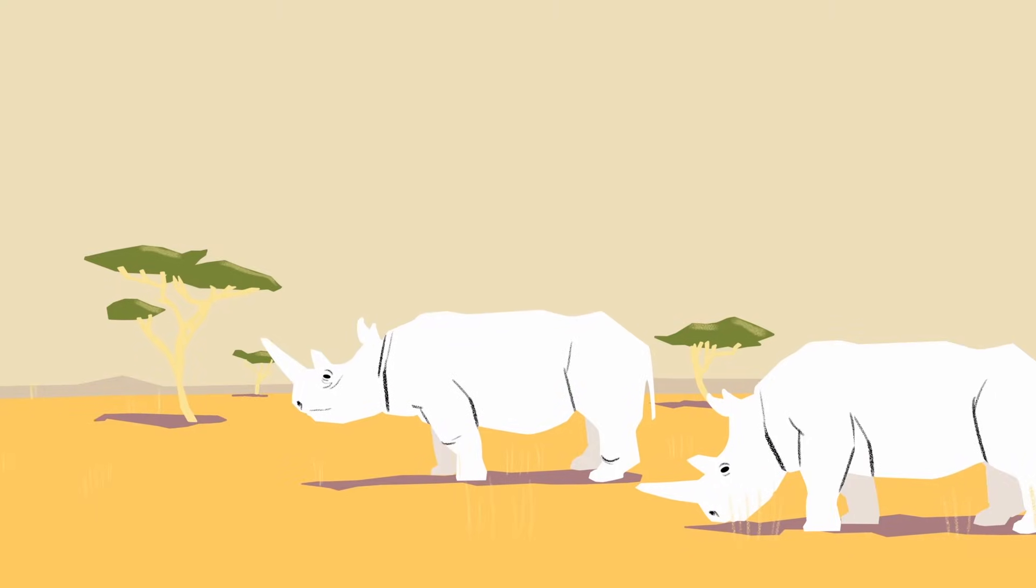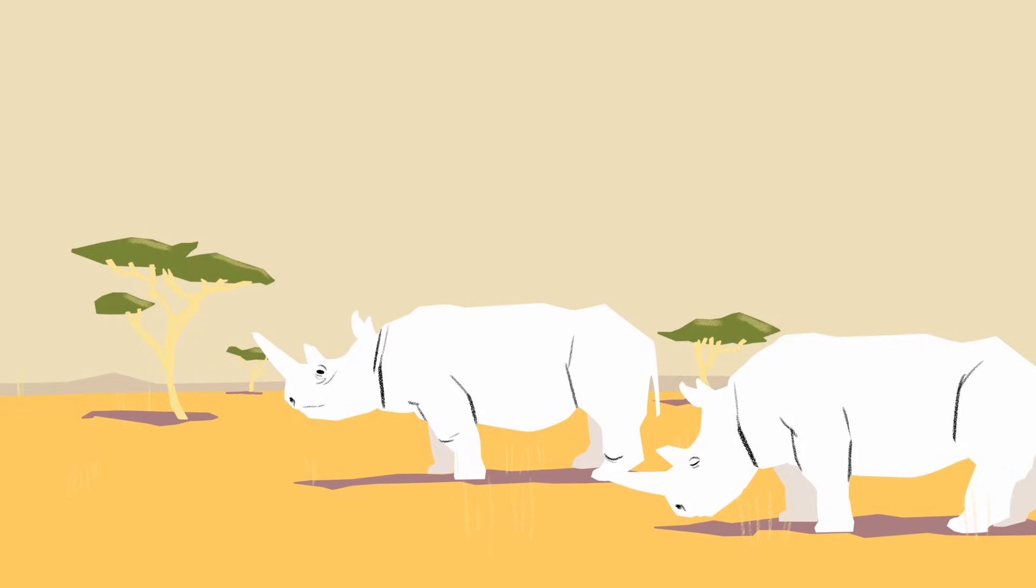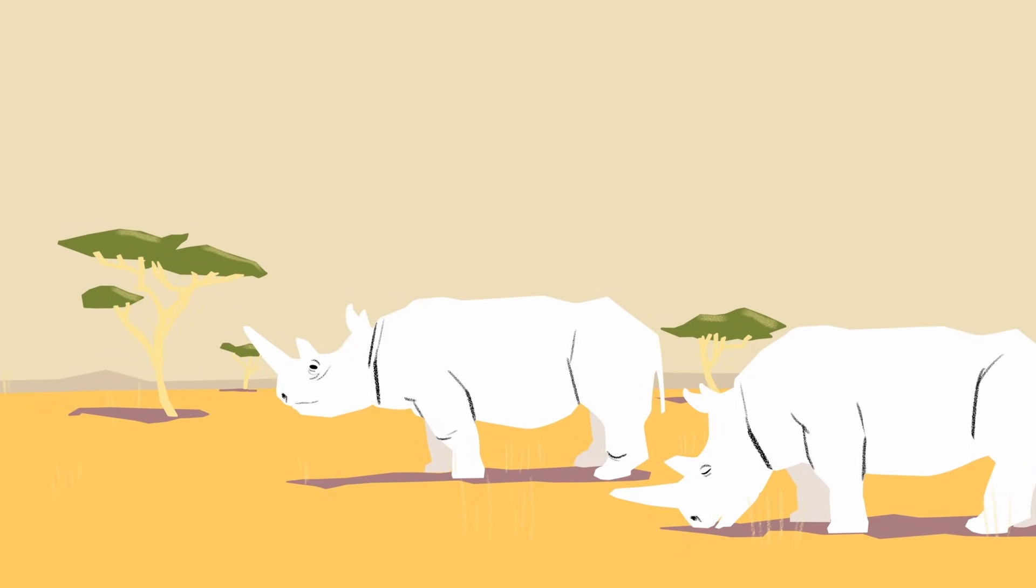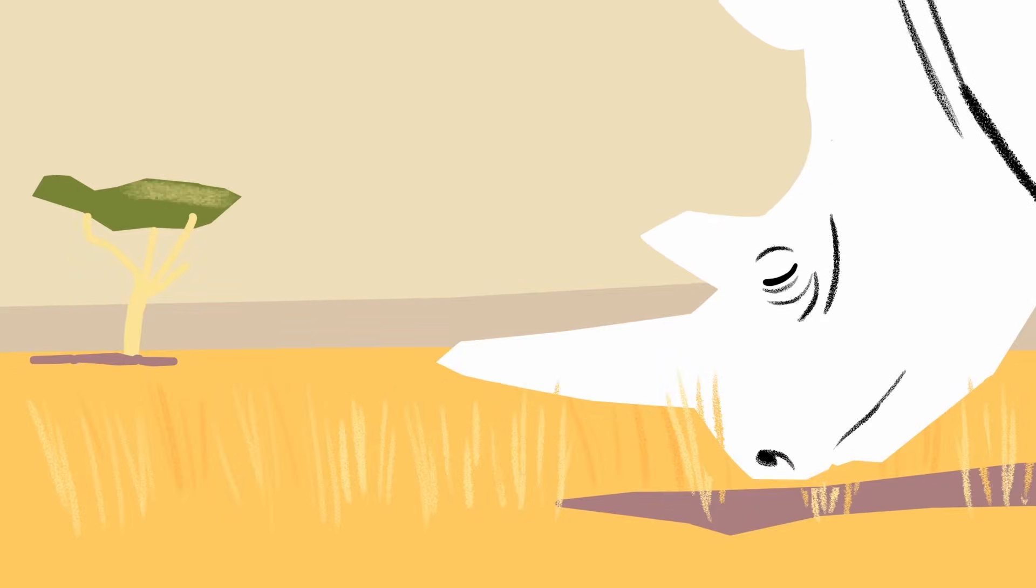In the savannas of Kenya, two female northern white rhinos, Najin and Fatu, munch contentedly on the grass.